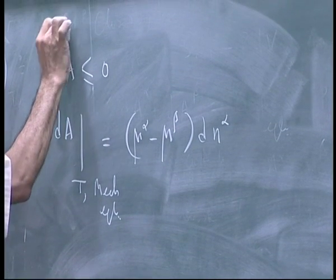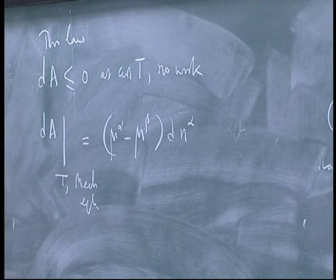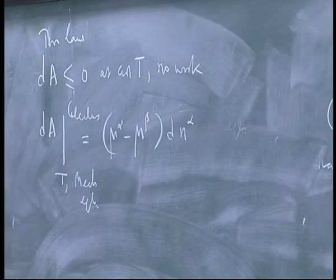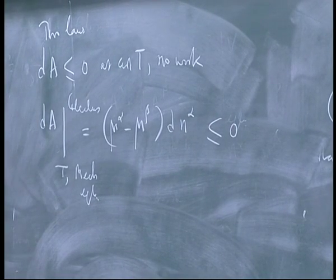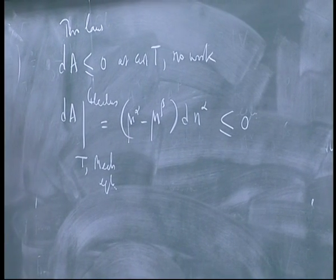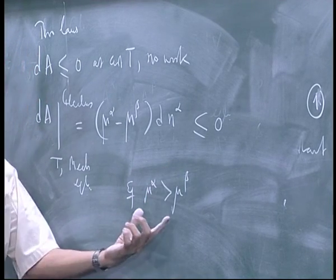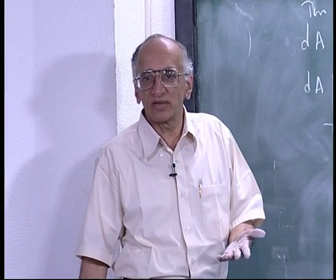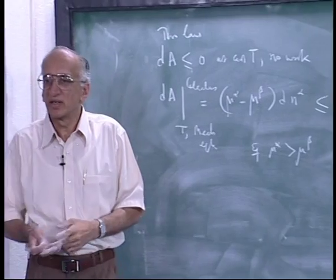So A is the natural variable to consider because I can build in the work correctly. Notice that the law really says dA is less than or equal to zero, and what you get is dA at constant temperature and conditions of mechanical equilibrium equals (μ_alpha minus μ_beta)·dN. This is thermodynamics — the two laws at constant temperature. From calculus alone you will not draw any conclusions in thermodynamics; you have to always use the law at some point. Calculus just gives you equalities.